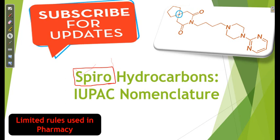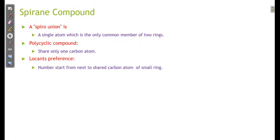There are many rules related to spiro compounds, but I am discussing only the rules which are most relevant and used in pharmacy. Spiro union is known as a single atom shared between two rings. If two rings are connected by two atoms, that is not a spiro compound — that is bicyclic. In bicyclic, there are two common atoms; in a spiro compound, there is only a single common atom.